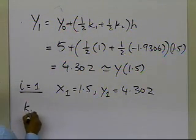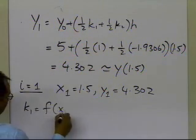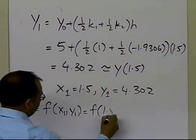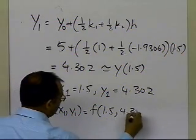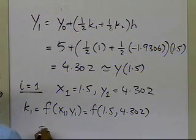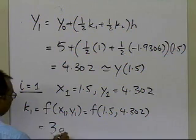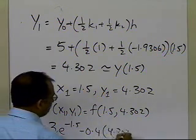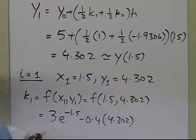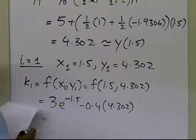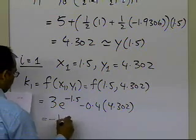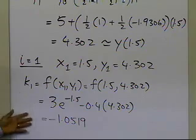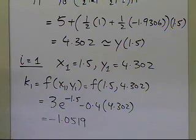What is k1 for this step? k1 is the value of the function at (x-sub-1, y-sub-1), which is (1.5, 4.302). That is 3e to the power minus 1.5, minus 0.4 times 4.302, and this value of k1 turns out to be minus 1.0519. That is the approximate slope at x equal to 1.5.